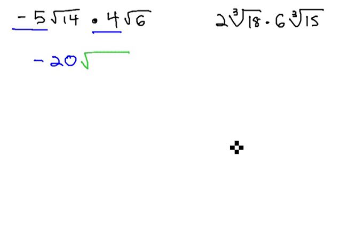And then inside the radical, we can multiply those parts together also, 14 times 6. 14 times 6 is 84.